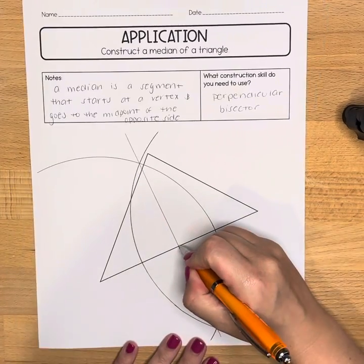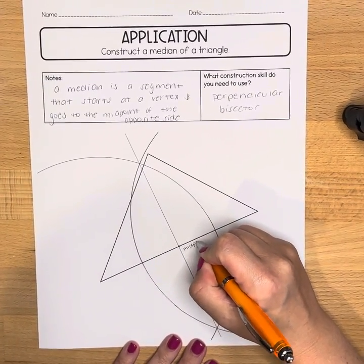Now we have found the midpoint of one side of the triangle.